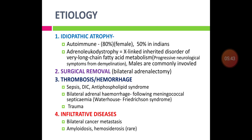Following bilateral adrenalectomy, adrenal insufficiency can result. Following thrombosis or hemorrhage to the adrenal gland due to sepsis, DIC, or antiphospholipid syndrome, or bilateral hemorrhage following meningococcal septicemia — called Waterhouse-Friderichsen syndrome — and following trauma, adrenal insufficiency can also result.